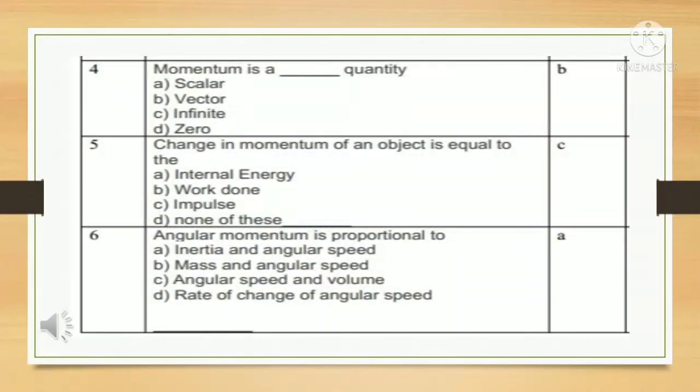Our next MCQ is momentum is a, fill in the blanks, quantity. Answer is B: vector quantity. Our next MCQ is change in momentum of an object is equal to. Answer is C: impulse.